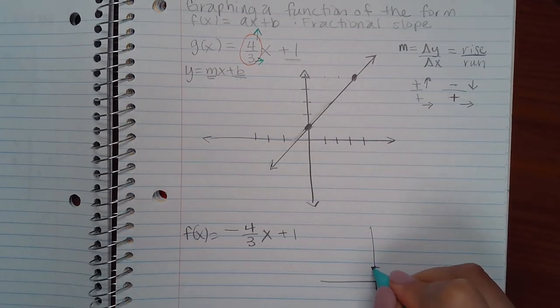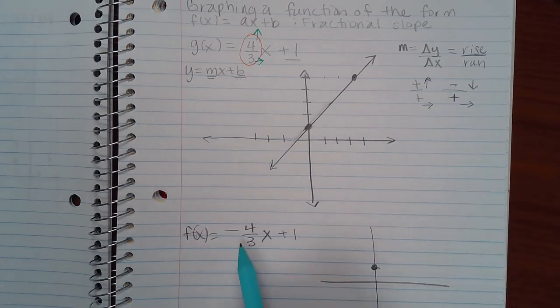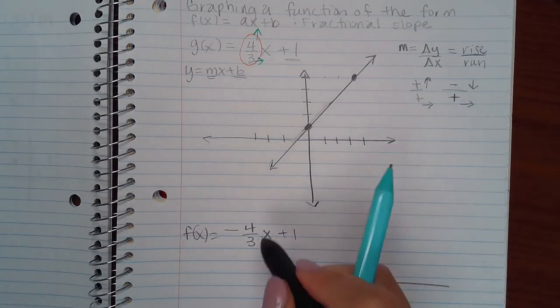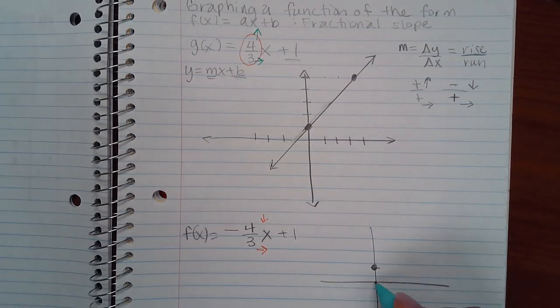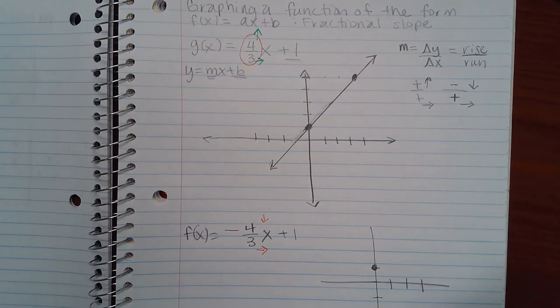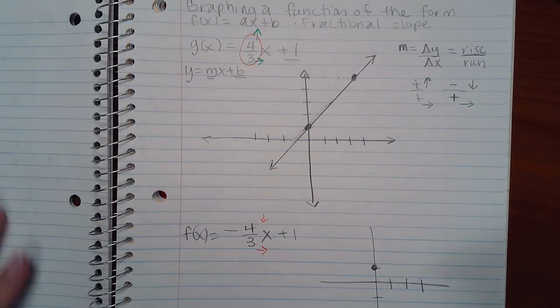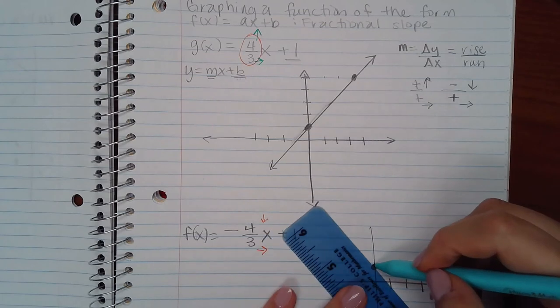I still would have started off at my y-intercept of 1. But because it's negative 4, I would have gone down 4, and then to the right. So 1, 2, 3, 4, and then 1, 2, 3 to the right, giving me a line that would have gone in this direction.